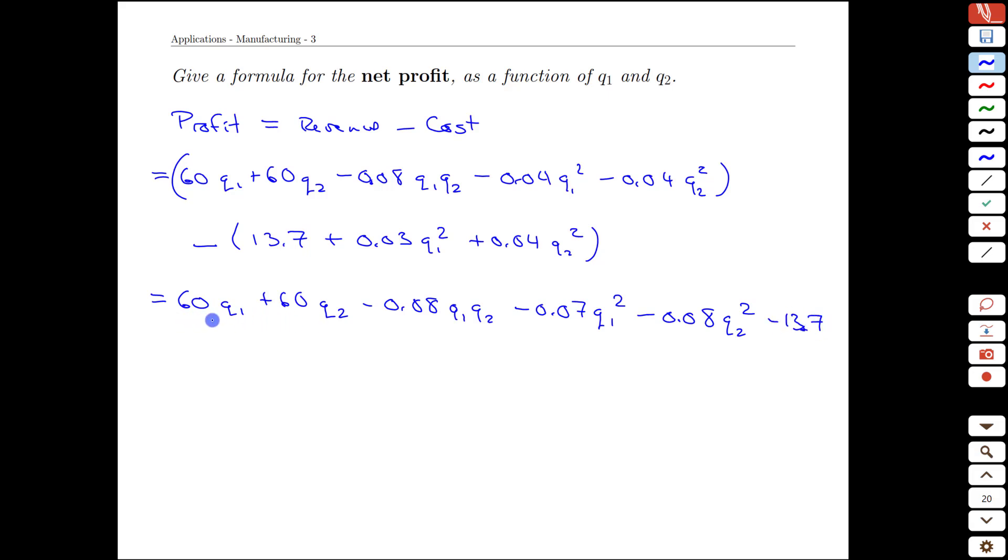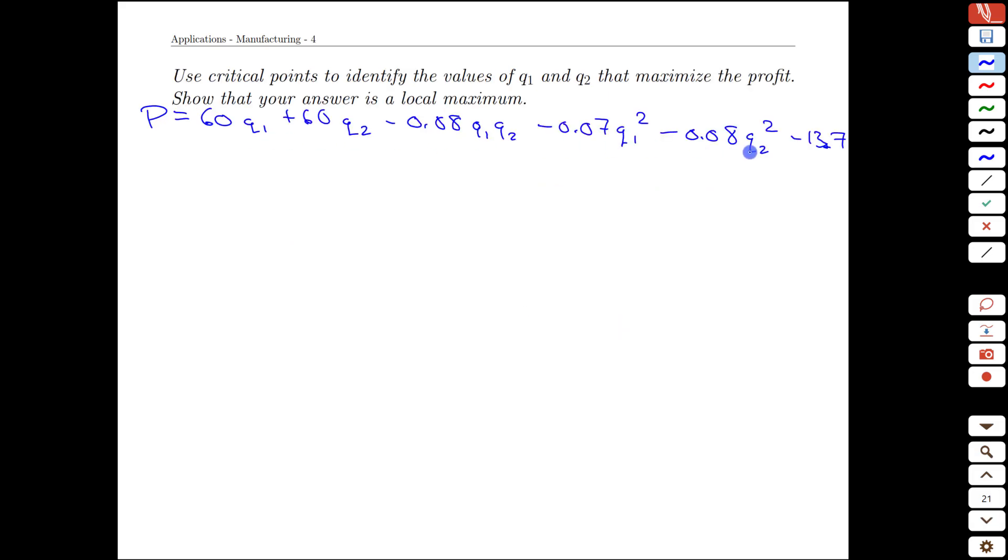So we've calculated an expression where if we are told how much we're going to produce out of each plant, we will get the net profit as a result. Our goal, of course, is going to be to find the optimal values for the production that maximize the profit. Here we have restated our expression for the profit function.